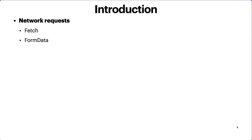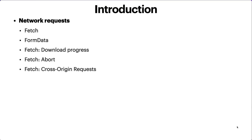Then we'll discuss network requests — how to send and receive data from a server. We'll use the Fetch API, learn what FormData is and how to send login or registration data to a server, check download and upload progress, abort requests, and make cross-origin requests. We'll cover URL objects and also XMLHttpRequest, which is now largely replaced by Fetch but still usable.